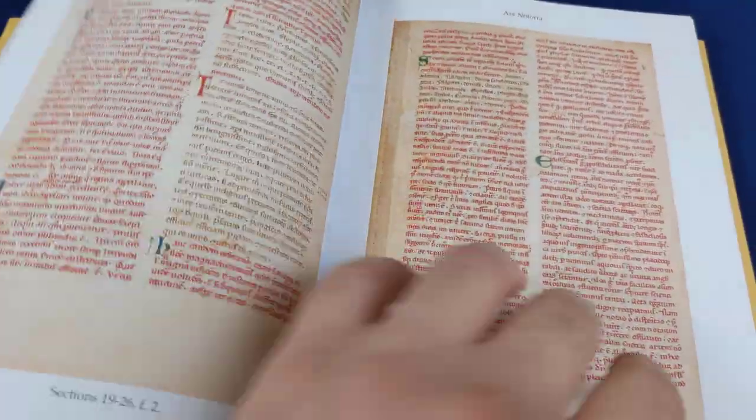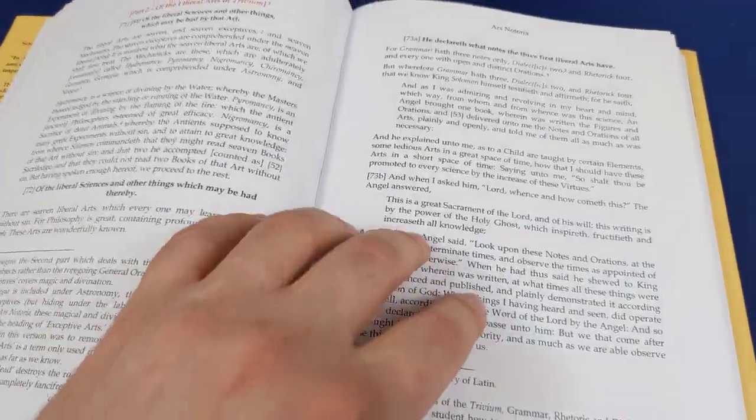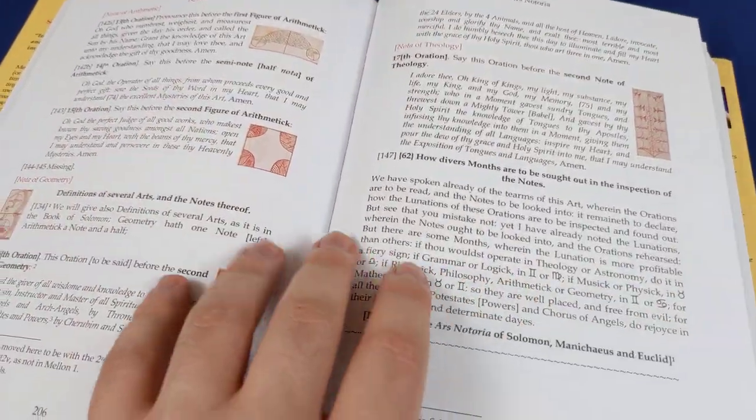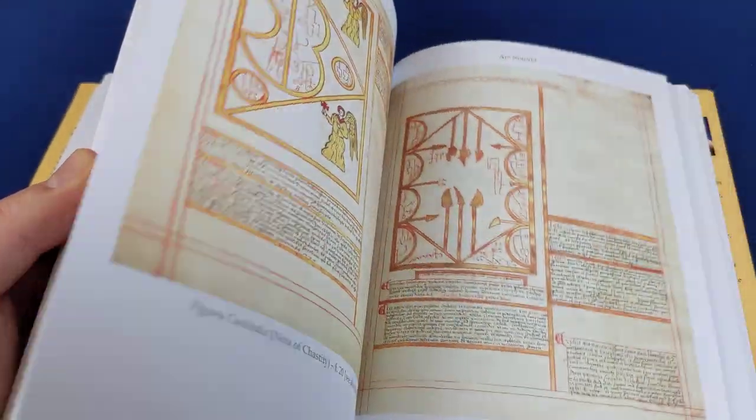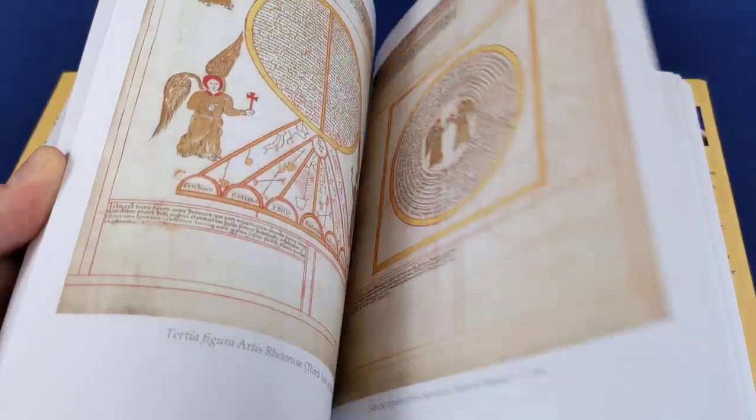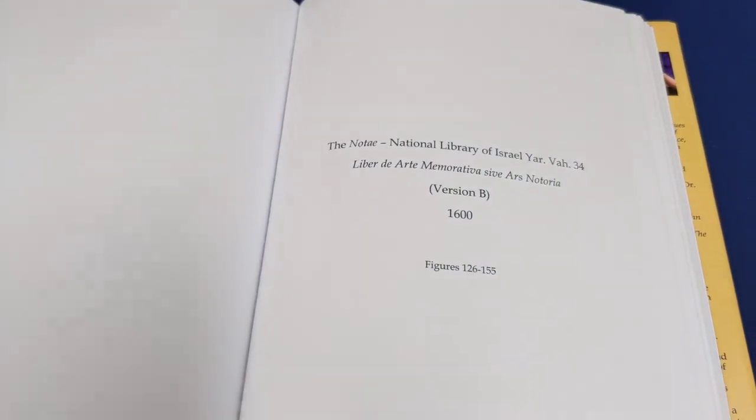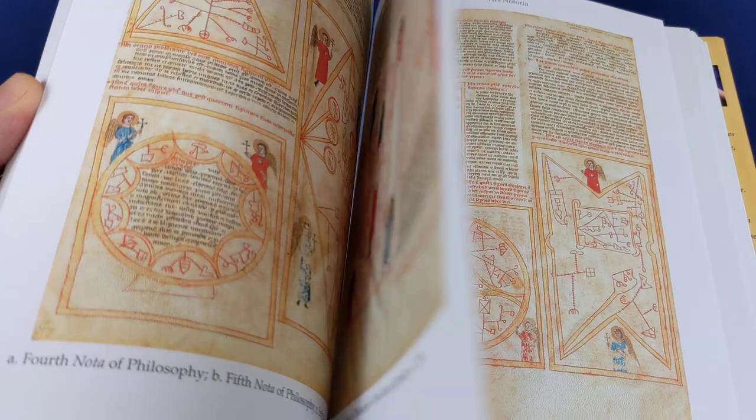Then you get into the transcription, and a description of the various notae and then the notae themselves right in the back there. It's just page after page of facsimile of these beautifully designed and beautifully rendered notae on the page.